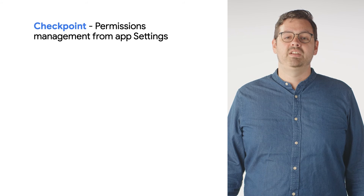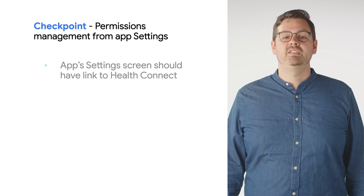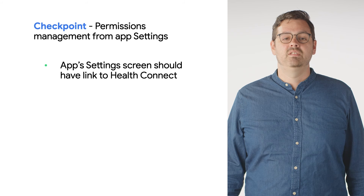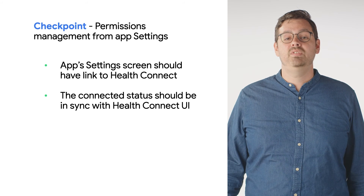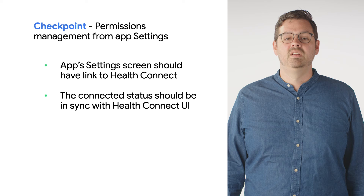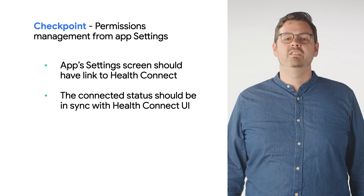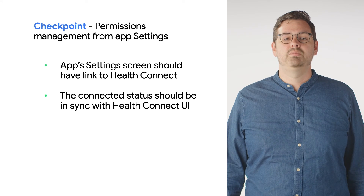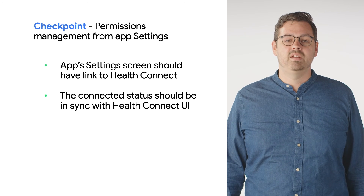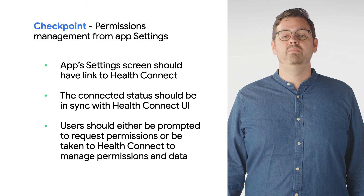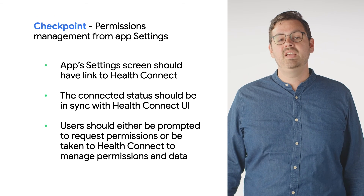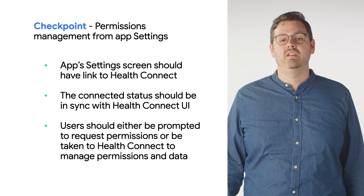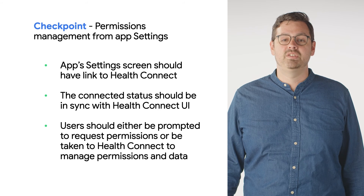At this point, your app's settings page should link to HealthConnect. The connected status should stay in sync with the status in the HealthConnect UI. Consider the case that the user revokes or allows permissions from HealthConnect. Users should either be prompted to request permissions or be taken to HealthConnect to manage permissions and data.